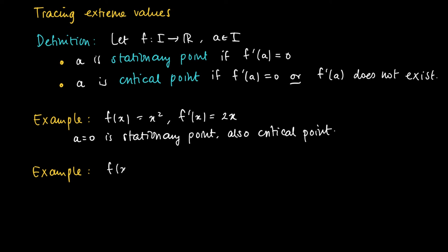Another example, standard example, of a non-differentiable function f(x) equals the absolute value of x. If you look at the graph, you see a kink at a equals 0. In a equals 0, the function is not differentiable. So a equals 0 is a critical point for this function f.